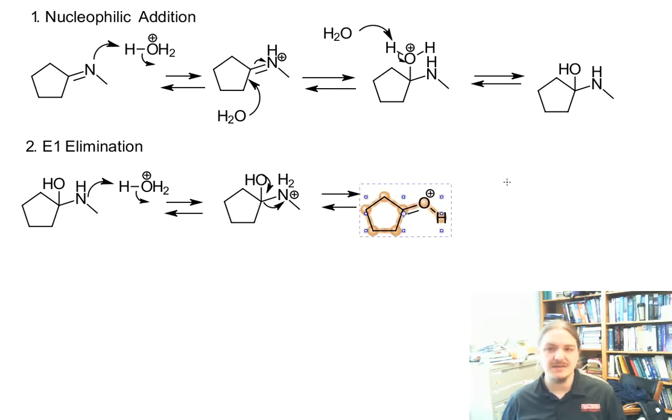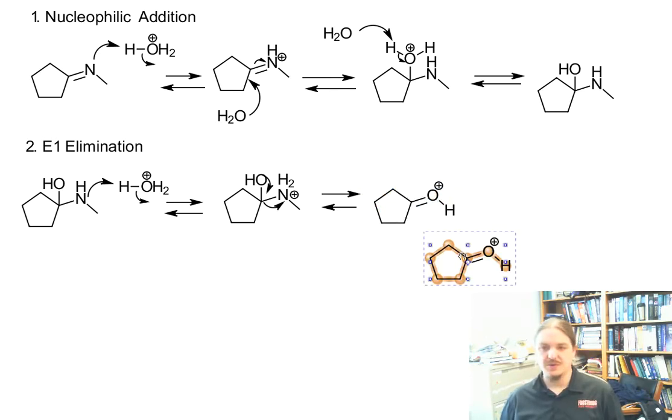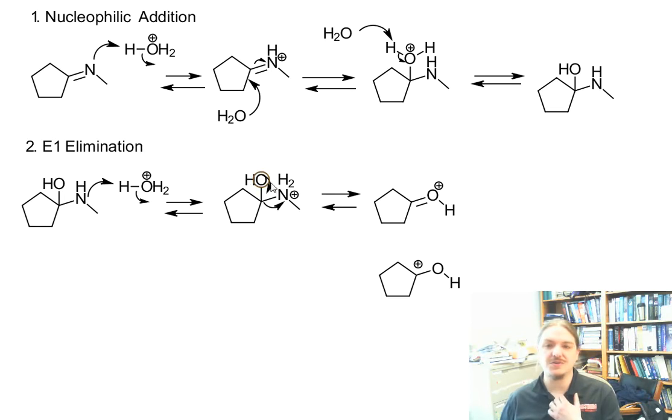And the only thing that it does is it gets to, all right, there are two different resonance contributors for this cation. The one on the bottom and the one on the top. And whether or not you show the lone pair on the oxygen helping the leaving group off depends on whether the one on the bottom or the one on the top.